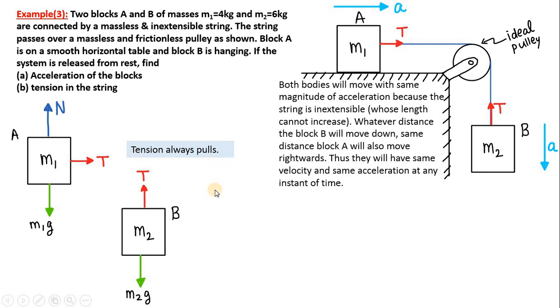Block B will move rightward. Next, regarding these accelerations: why these accelerations are equal for both bodies? Both bodies will move with the same magnitude of acceleration because the string is inextensible, meaning its length is constant or cannot increase. So if the length of the string always remains constant, then whatever distance block B falls down, the same distance A will move rightward. For example, if B moves one centimeter down, then A will move one centimeter to the right.